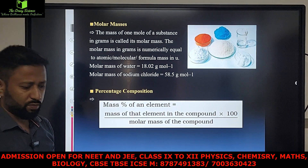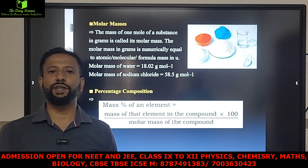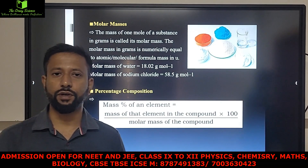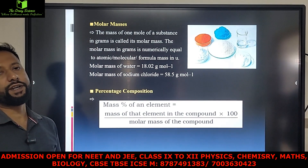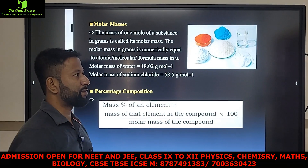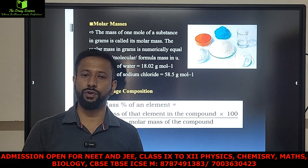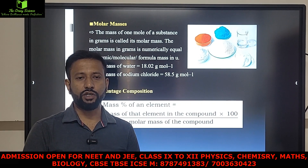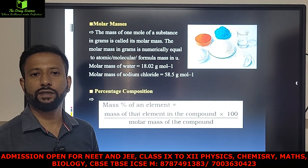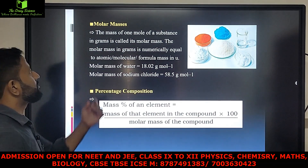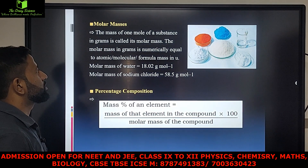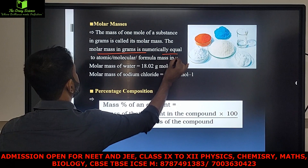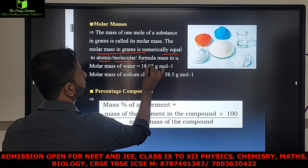What is molar mass? Molar mass — whenever I am taking one mole of a substance, the amount of mass we are getting is known as molar mass. The molar mass is equal to one molecular mass; both are equivalent. The mass of one mole of the substance in grams is called molar mass, and the molar mass in grams is numerically equal to atomic, molecular, or formula mass.